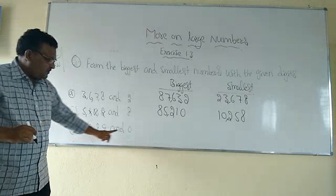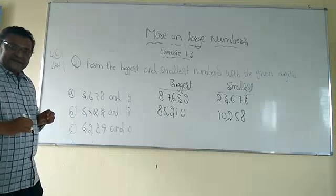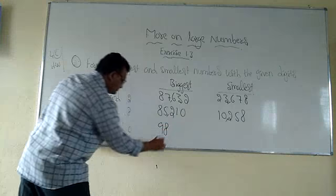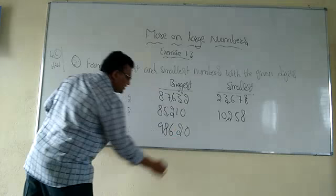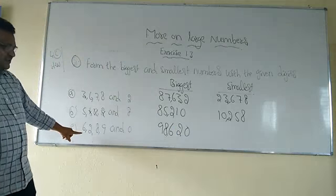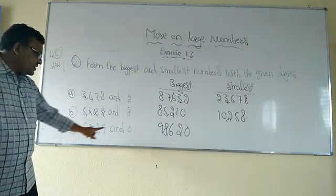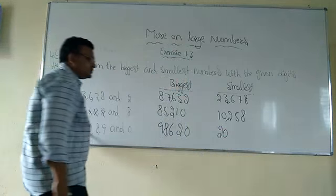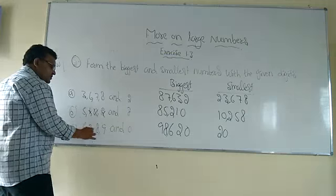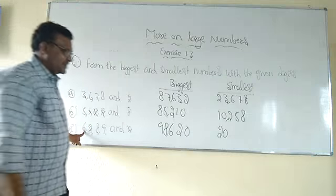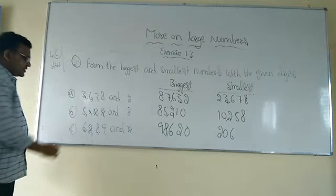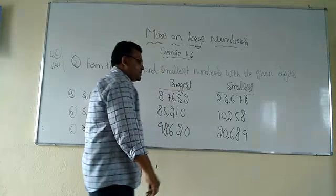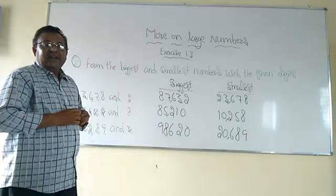One more example — five digits are given and zero is also there. When writing in descending order: nine, eight, six, two, zero — so the biggest number is 98,620. In writing the smallest number, first skip zero. The smallest remaining digit is two, then write zero next, then the remaining digits six, eight, nine in ascending order: six, eight, nine. So the smallest number is 20,689.